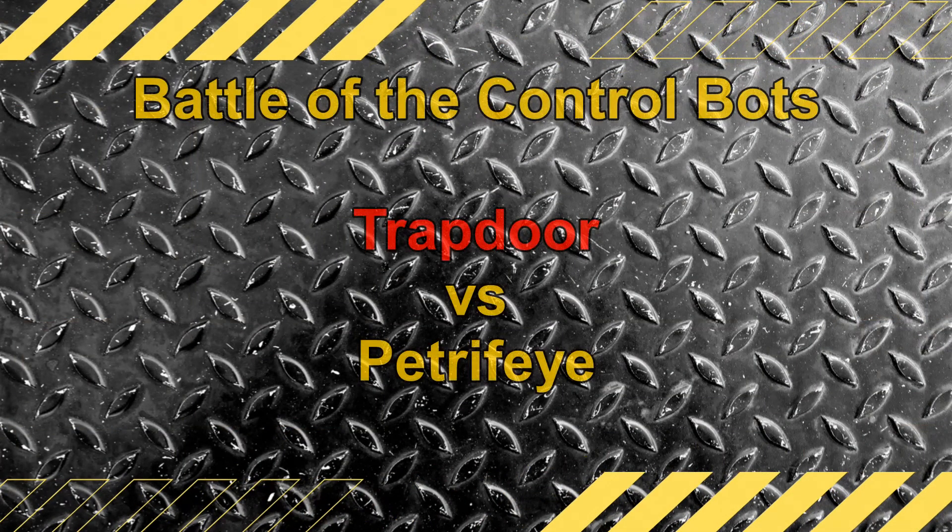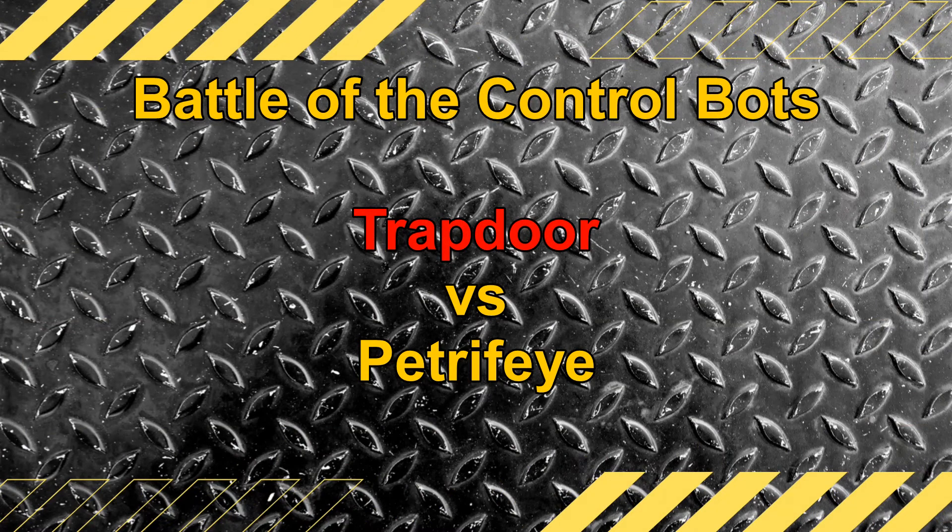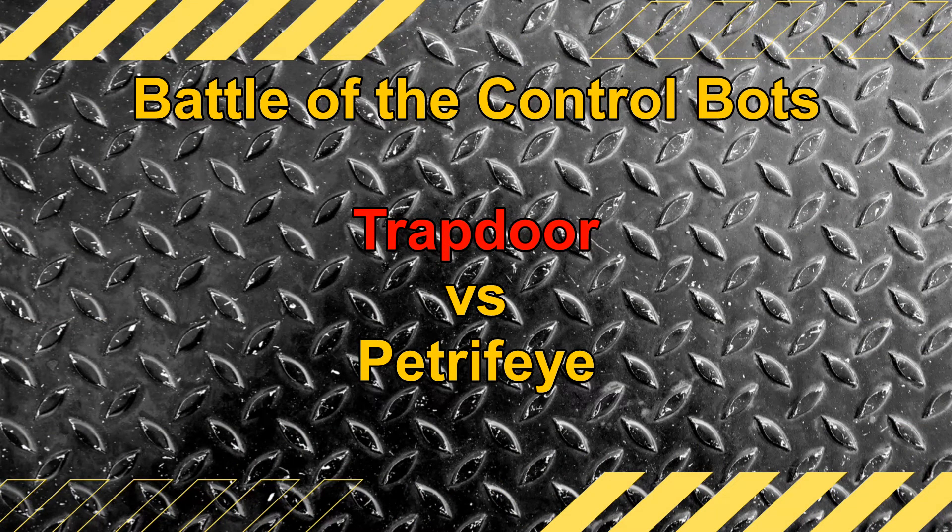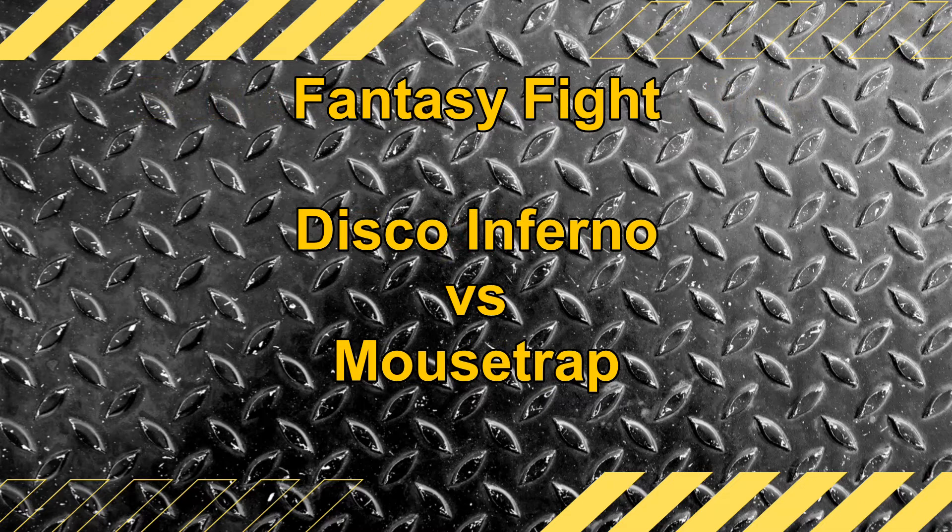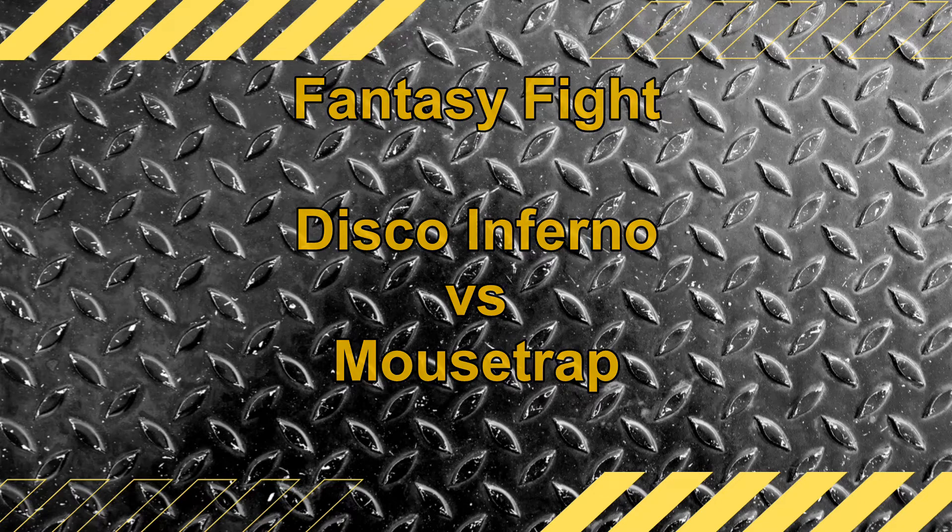Just what I expected from two grabbing machines. Trapdoor put up a fair fight, but lost due to Petrify's pure dominance. And now we move on to the last fight of the night. Two machines from the classic era come together for a fantasy matchup. The constant need to impress Disco Inferno will turn to face off against the already impressive Mouse Trap. Both bots looking to put on a show, so let's let them do battle.